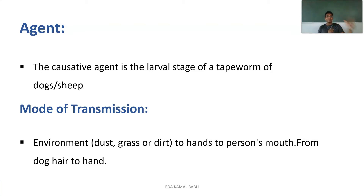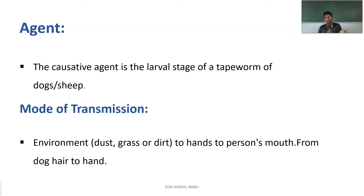If a person's hand becomes contaminated and they bring that hand without proper washing near their mouth, there are chances of the larval stages of the tapeworm transferring into the person. Also, directly from dog hair — whenever a person is playing with dogs, if the dog's hair is contaminated with larval stages, there will be chances of entry into the human being.